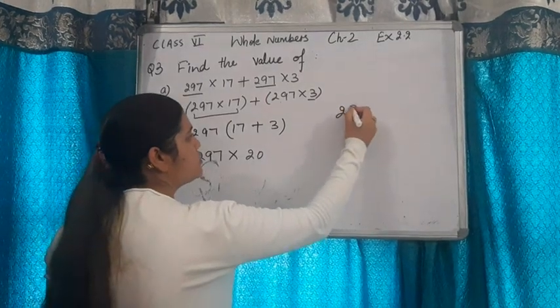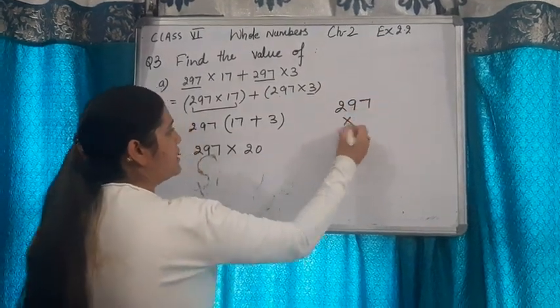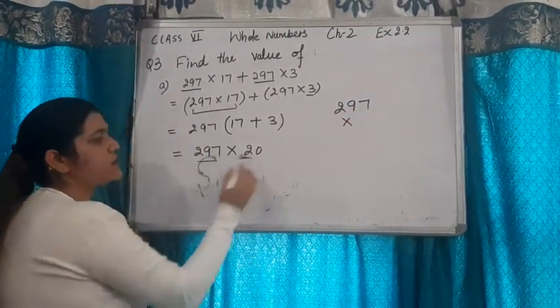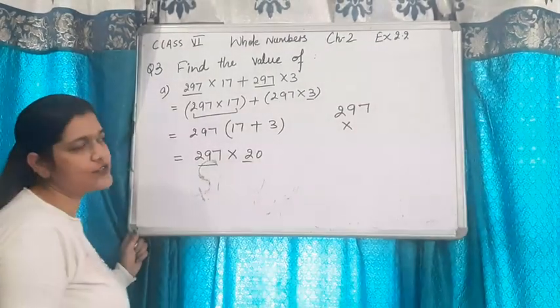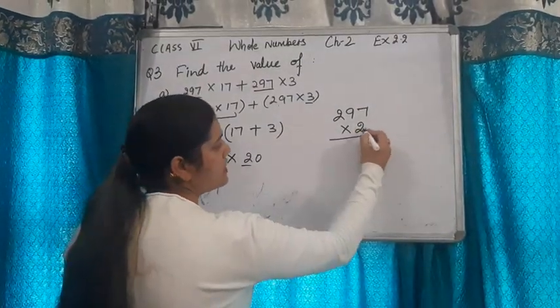Now 297. We will multiply 297 by 2. We will multiply 297 by 2.